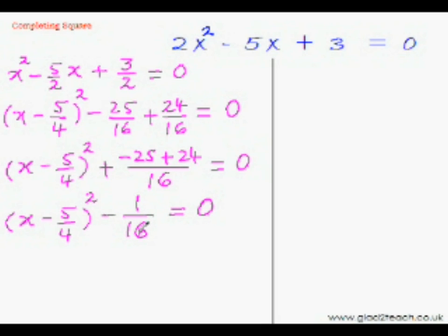Now take this minus 1 over 16 to the other side so it will become plus 1 over 16. And now you can take this square to the other side as well. So when this square will go to the other side it will become square root, as the square and the square root are opposite of each other.